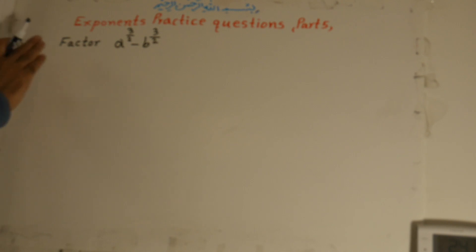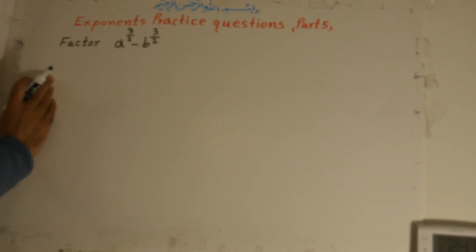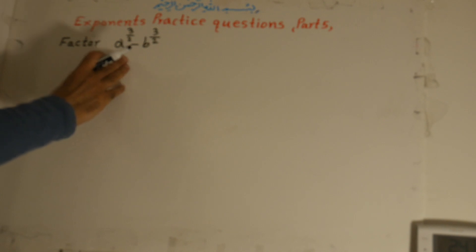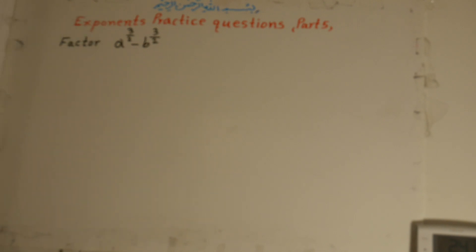Hi there, welcome to mathematics class. The lesson topic is exponents practice questions. We will factor a to the power of 3 over 2 minus b to the power of 3 over 2. This is a binomial we need to factor into as many factors as possible.